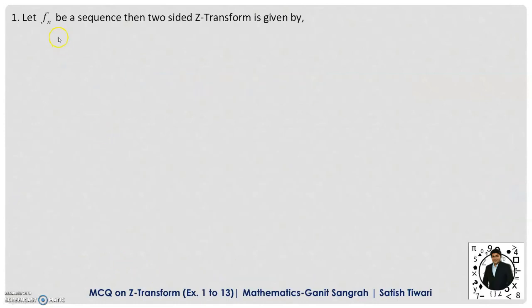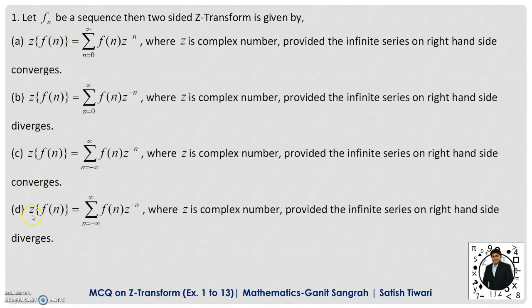Example number 1: Let f(n) be a sequence. Then the two-sided Z-transform is given by — we are having these four options. The two-sided Z-transform is asked. In option A, the summation starts from 0 to infinity, so this cannot be a two-sided Z-transform — it is completely wrong. In option B, it is starting again from 0 to infinity, so this is not the correct option either.